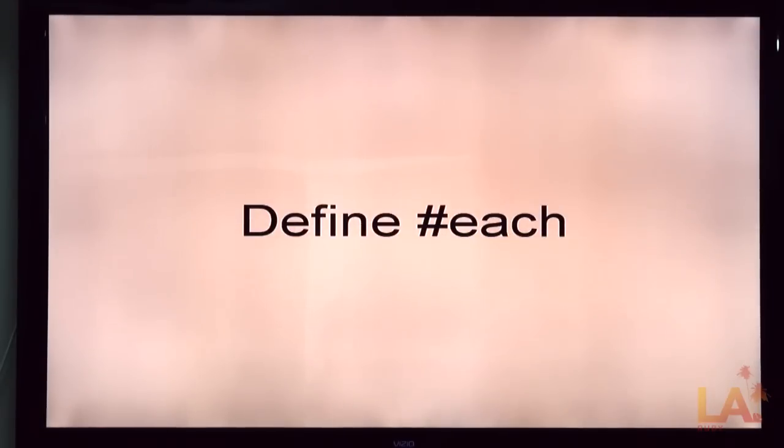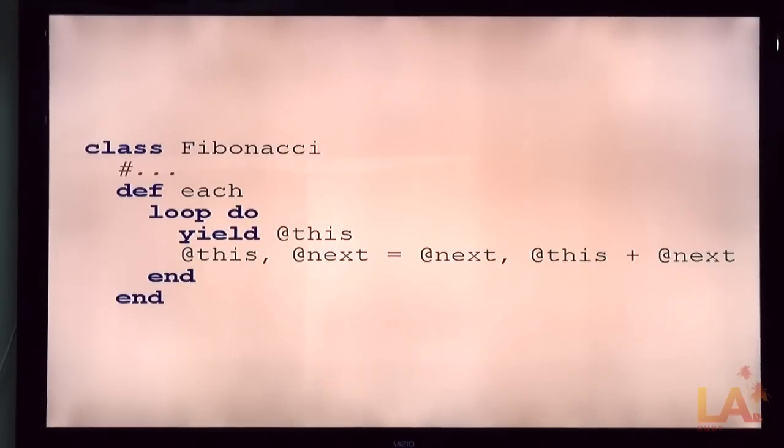But, not necessarily list-like things. It's any sequential data as we would see. Here's our example, right? The Fibonacci series as an object or as a class. So far, this is the entire code we've got set up. We're all familiar with the Fibonacci series. Start with one and one, add, right? So, what are we going to do? We're going to define an each method.